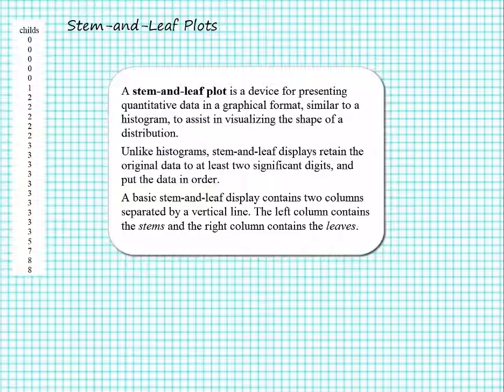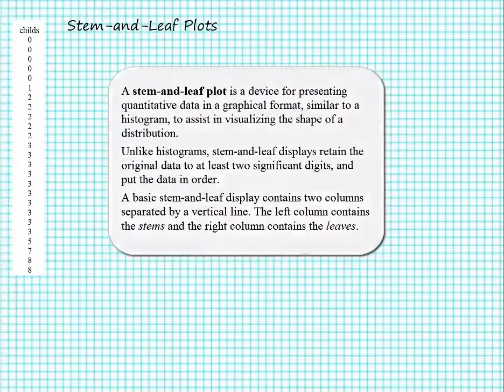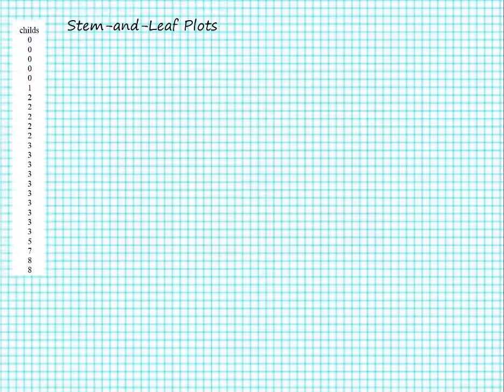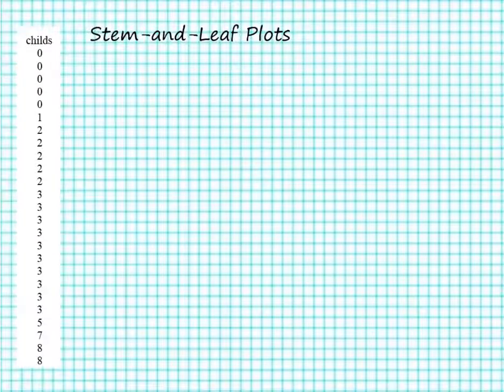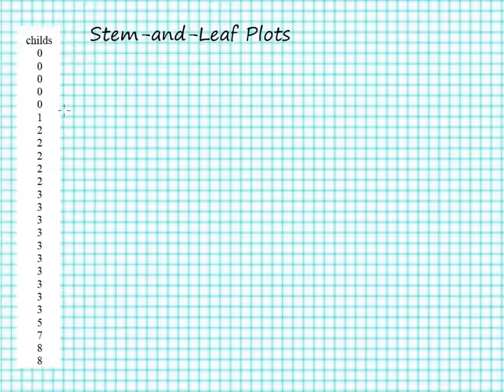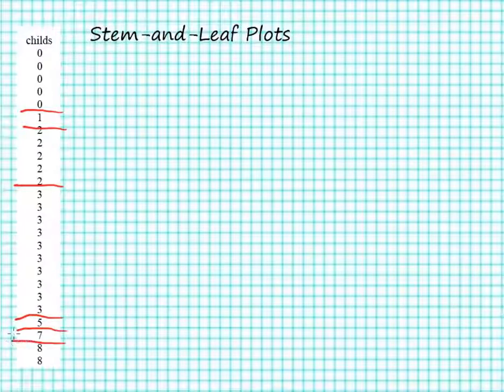The first example I'm going to look at is using the variable from the General Social Survey called 'childs'. I've taken a random sample of 25 cases. This variable measures the number of children that a respondent has. You can see from the data that I've already ordered these, sorted them from low to high, so we can see that if I draw a line through these everywhere there's a change in the responses, I'm going to use this to draw my stem-and-leaf. These groups right here.